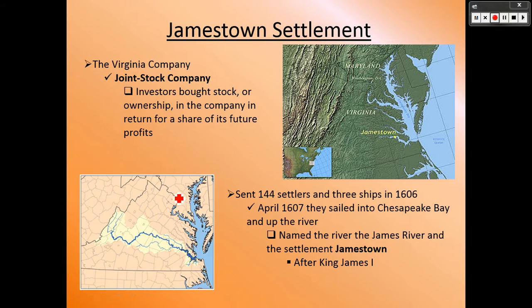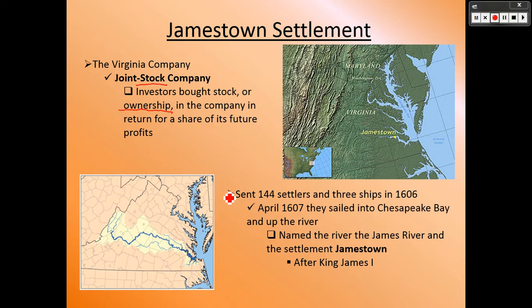The first company to go there and receive the first charter is called the Virginia Company, organized as a joint stock company. Stock means you have ownership — a part of that company. If the company makes money, you make money; if it loses money, you lose money. We'll go over stocks more in depth later in the school year, covering how you can buy stocks today in companies like Apple, Google, and Disney.